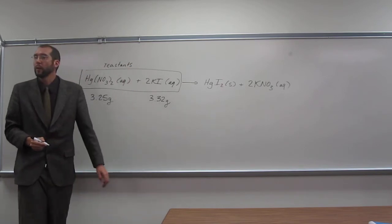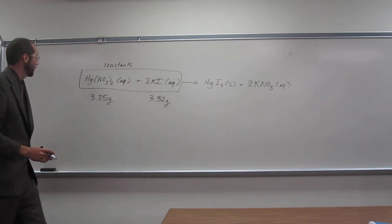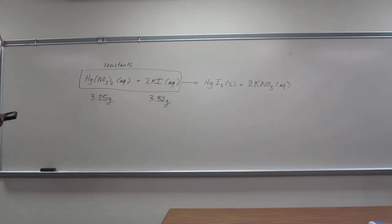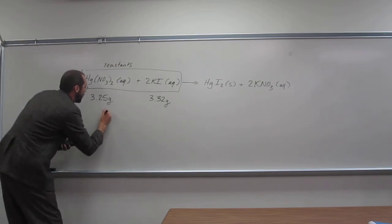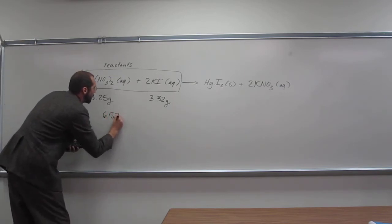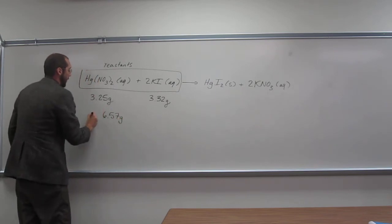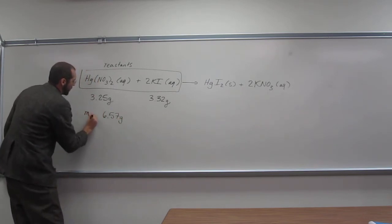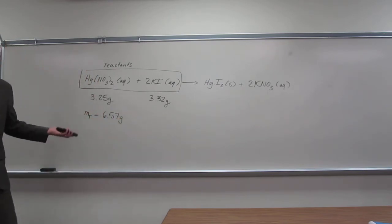Both of those numbers are given to us, so let's just put them in our calculator. 3.25 plus 3.32 is 6.57 grams. So that's the mass total of the reactants. Is everybody okay with that?